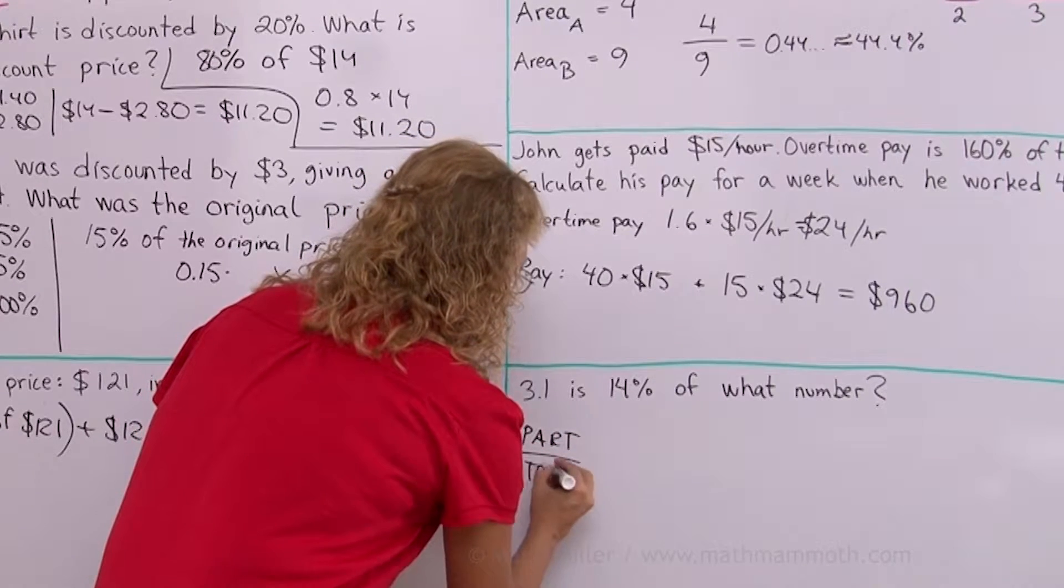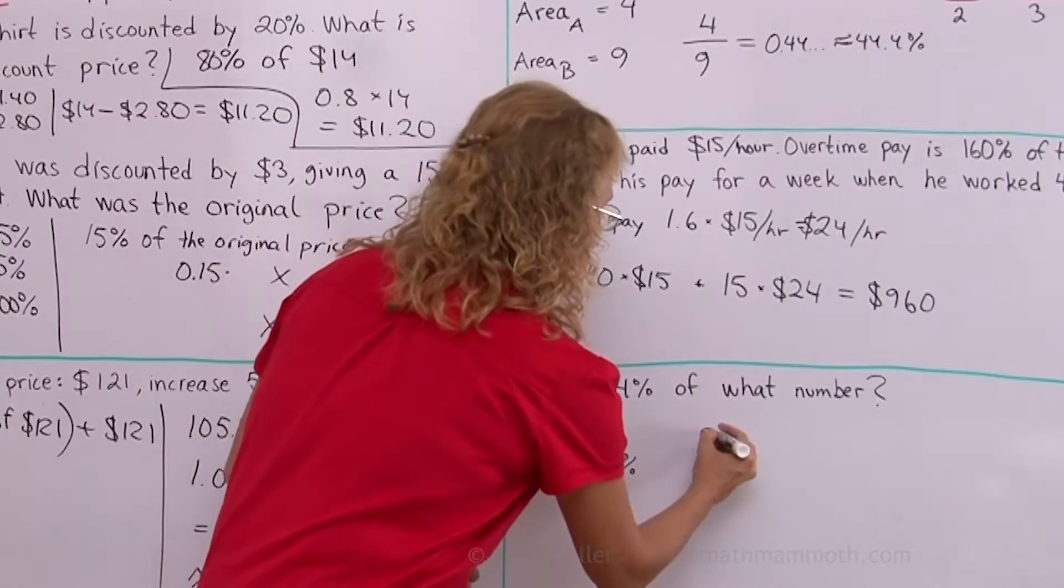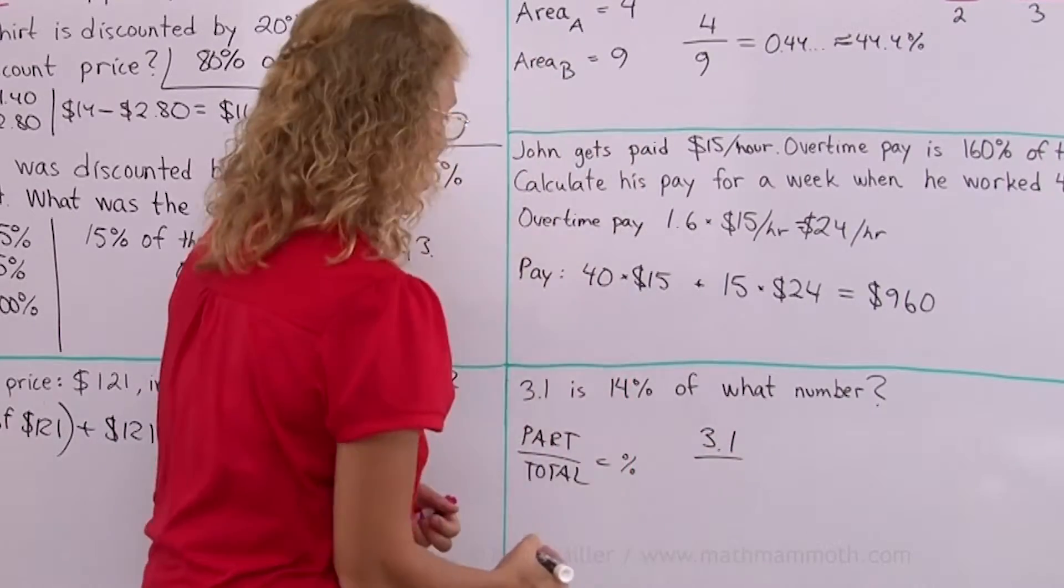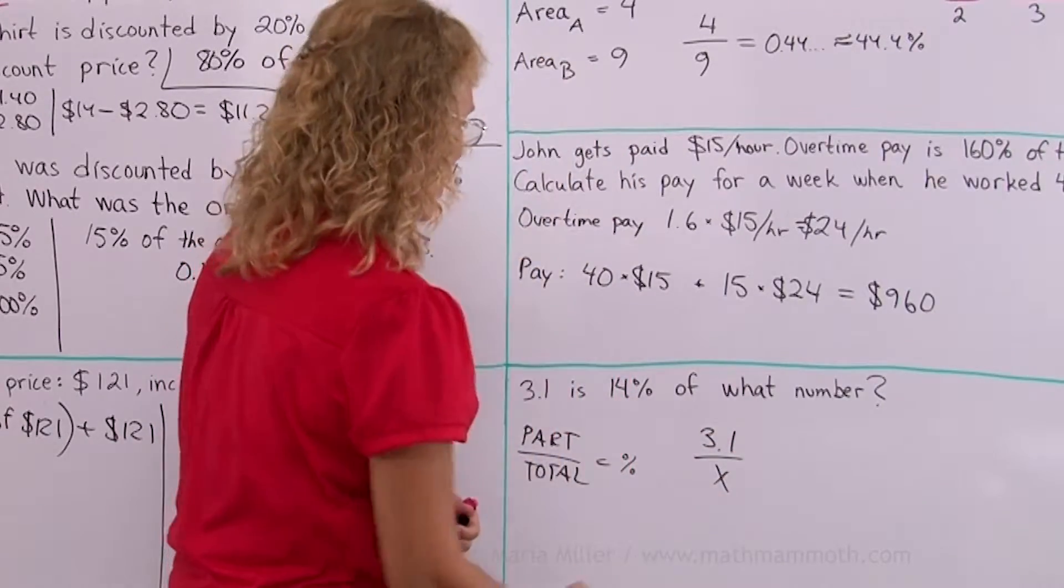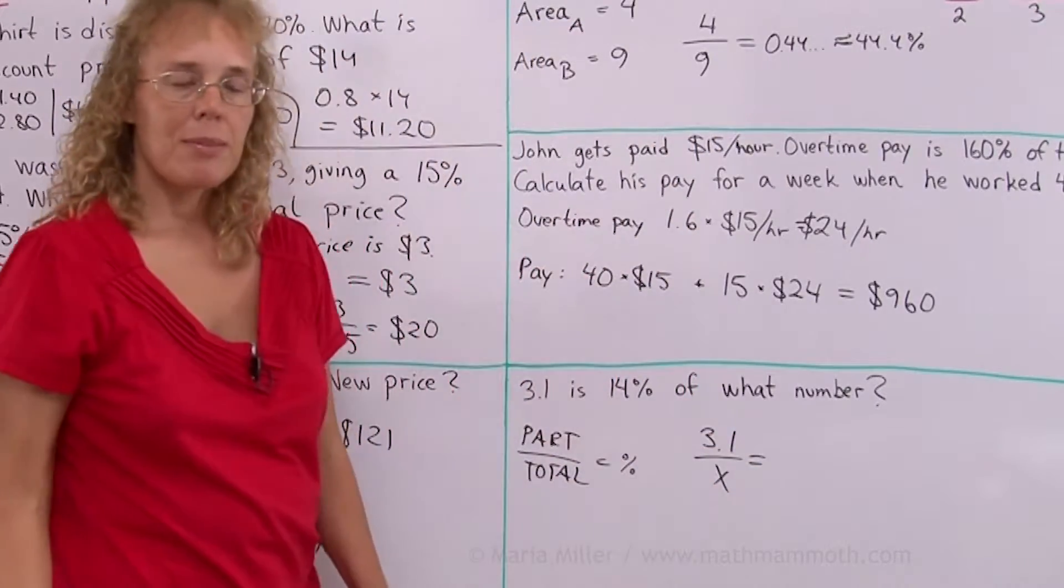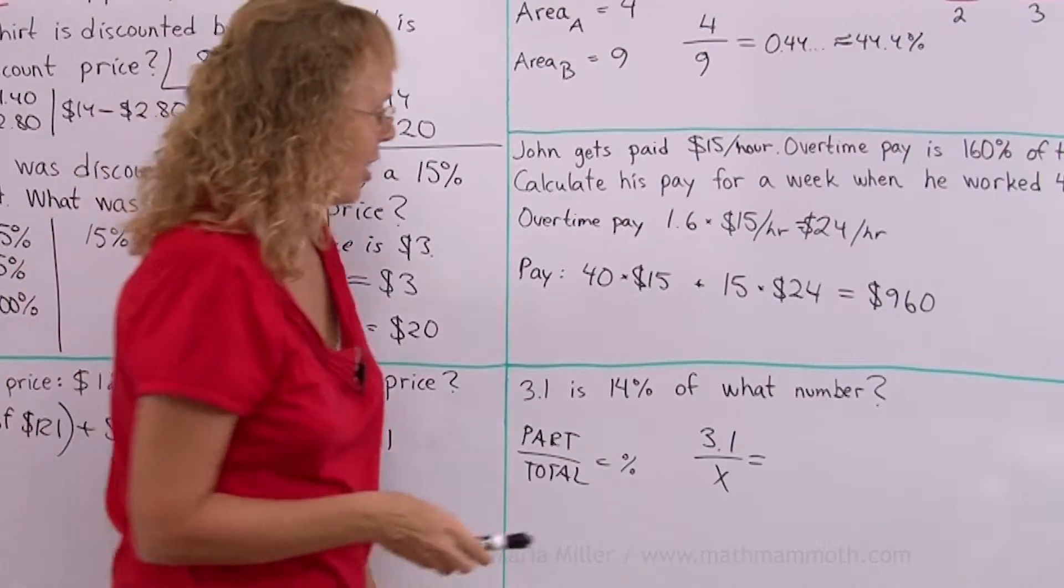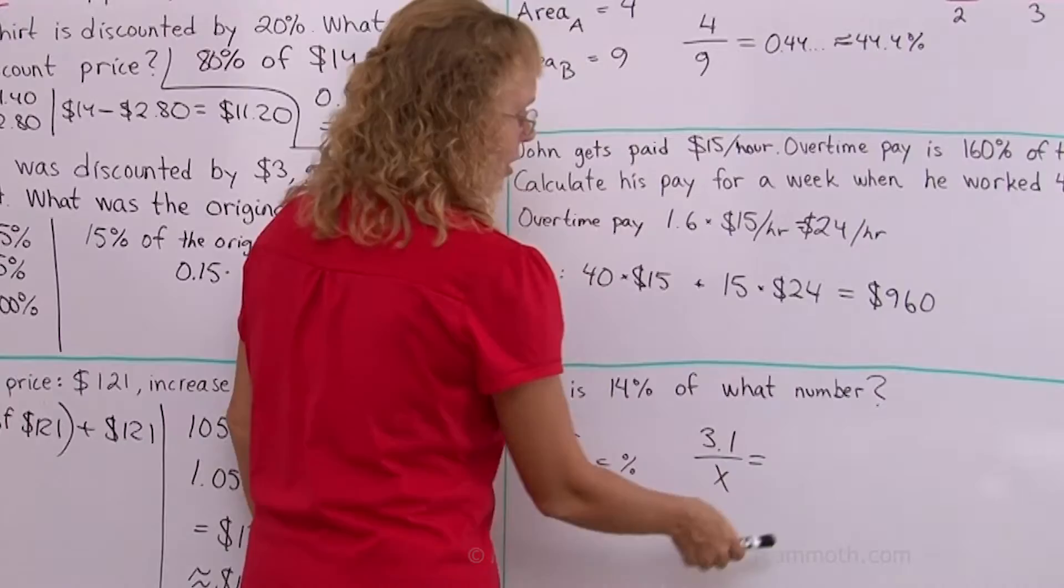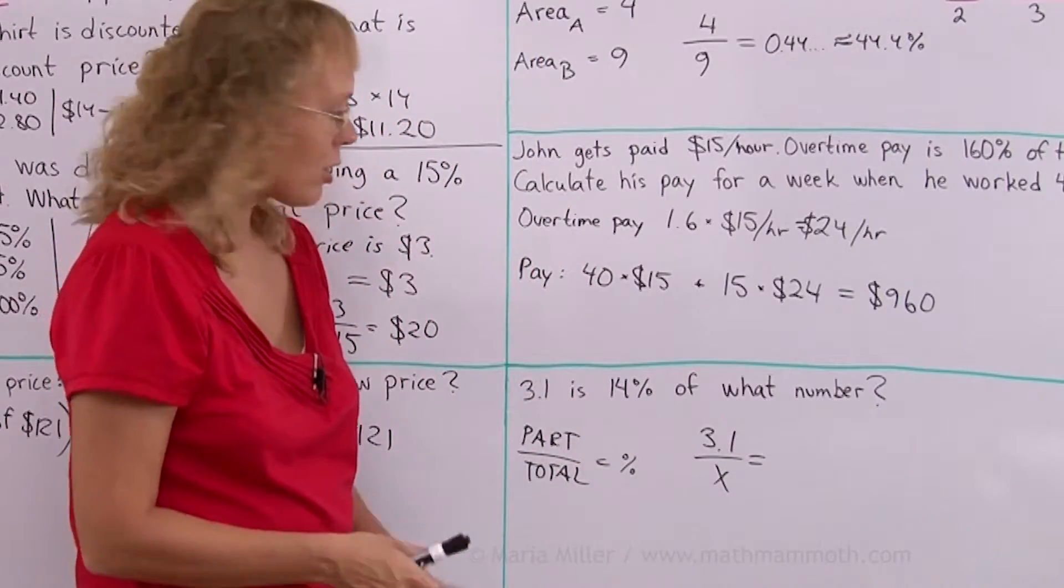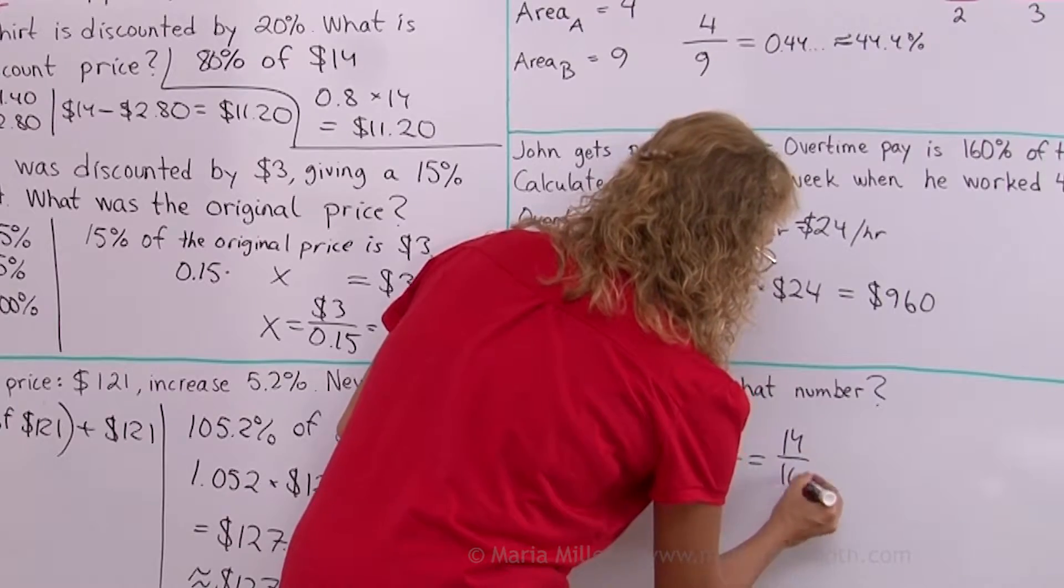Part over total is your percentage. So I know my part. It's 3.1. I don't know my total. It's the what number. And this is 14%. So on this side you write 14%. But you need to write it either as a decimal or as a fraction. If you write it as 14 over 100, then you get the proportion you can solve. So let's do that. 14 over 100.